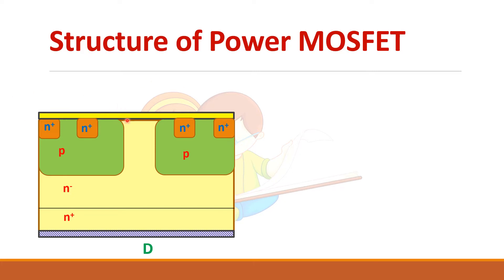As mentioned earlier, the gate terminal should be insulated from the rest of the device. This yellow color region is called the SiO2 layer — it is an insulating layer which insulates the gate terminal from the rest of the MOSFET. To make electrical connection for the gate you need a metallic layer. This gate terminal is separated from the device by this SiO2 layer. The source should be connected to the body of the MOSFET, so metallic contacts are made here.